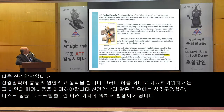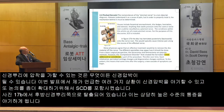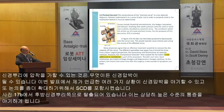Pinched nerves. The nomenclature of "pinched nerve" is a nondescript diagnosis. Patients understand it as a cause of pain, but in order to properly treat it, the mechanism behind it must be determined. Causes include foraminal encroachment, disc bulges, herniation, and stenosis — anything that exerts pressure onto the cord or nerve root. In Figure 17b, the disc is herniated posteriorly onto the nerve root, which would typically cause intense pain along the course of the affected nerve.